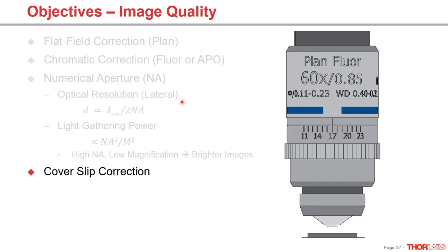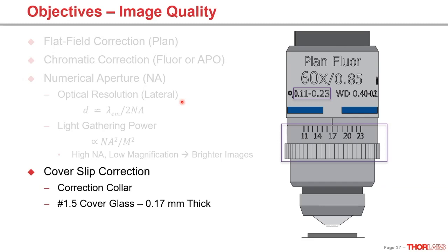A point that is often overlooked is cover slip correction on the objective lens. Some objectives clearly state the cover glass correction range — in this case 0.11 to 0.23 millimeters, and it has a correction collar for adjustment. It's important to match the correction with the actual cover slip you're using. Many objectives that don't state this on the lens are corrected for number 1.5 cover glass, which is 0.17 millimeter thickness.